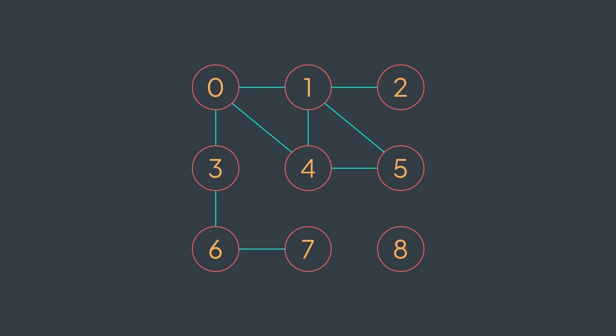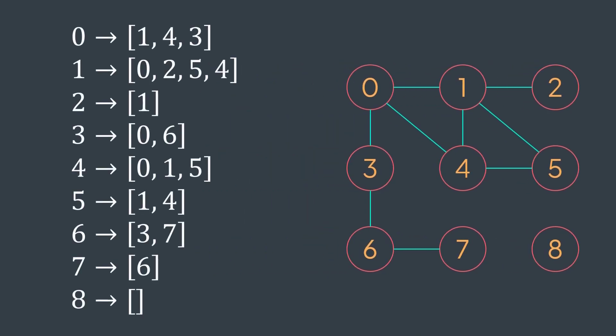By doing so, you should get something like this. We have vertex zero, its neighbors are one, four, and three. We have vertex one, its neighbors are zero, two, five, and four, and so on. That is the adjacency list of this graph. That's the concept: we have a list of key-value pairs, where the key is the vertex and the value is the list of its neighbors.